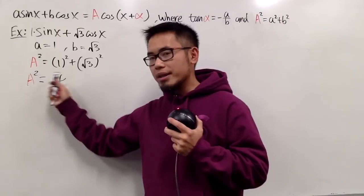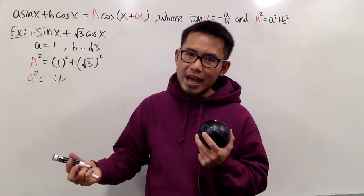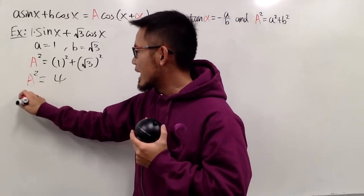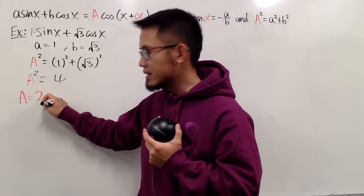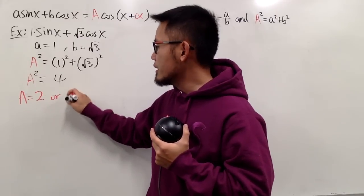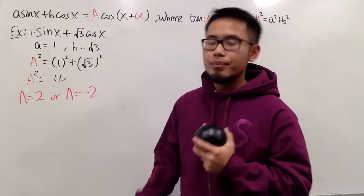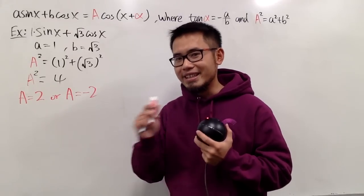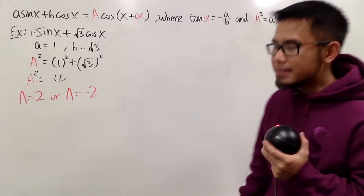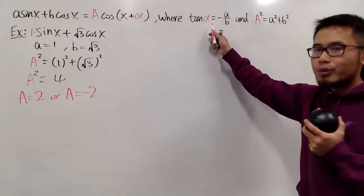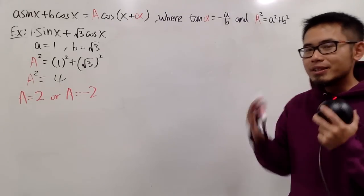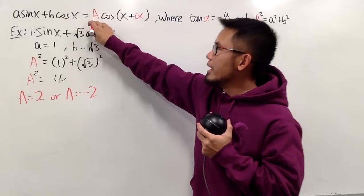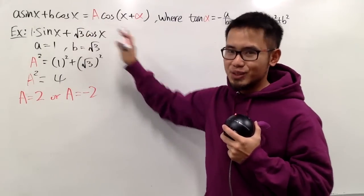From here, we know capital A square is equal to little a square, which is 1 squared, plus little b square, which is square root of 3 squared. We have capital A squared equals 1 plus 3, which equals 4. Now, A squared equals 4. What's the value of A? In fact, we have two answers to this. We know that capital A can be equal to plus 2, or it can also be equal to negative 2. Now the question is, which one are we going to use? The answer to that is it depends. It depends on the alpha value that we are going to use later on. We have, in fact, infinitely many combinations of capital A and alpha to make this work.